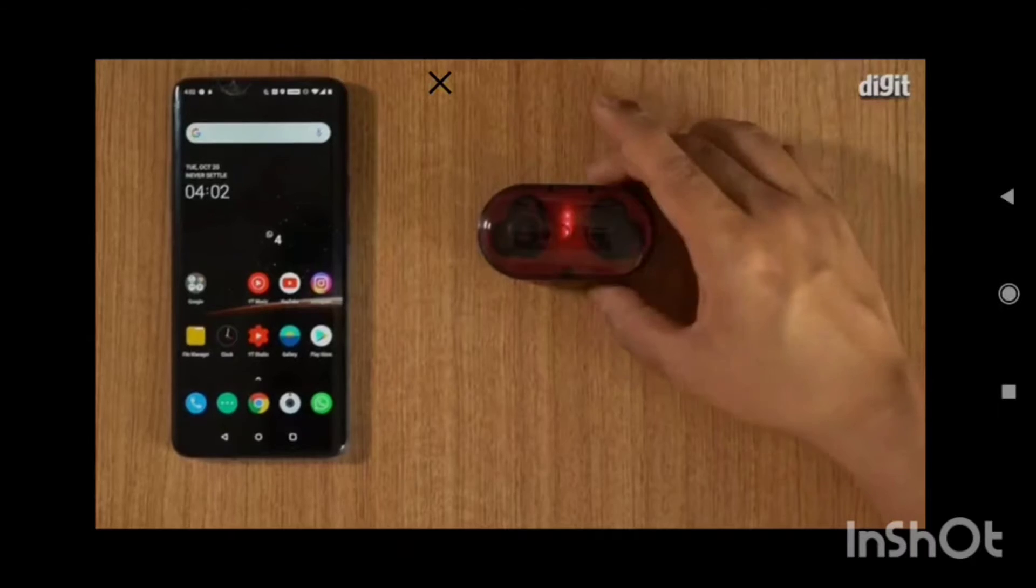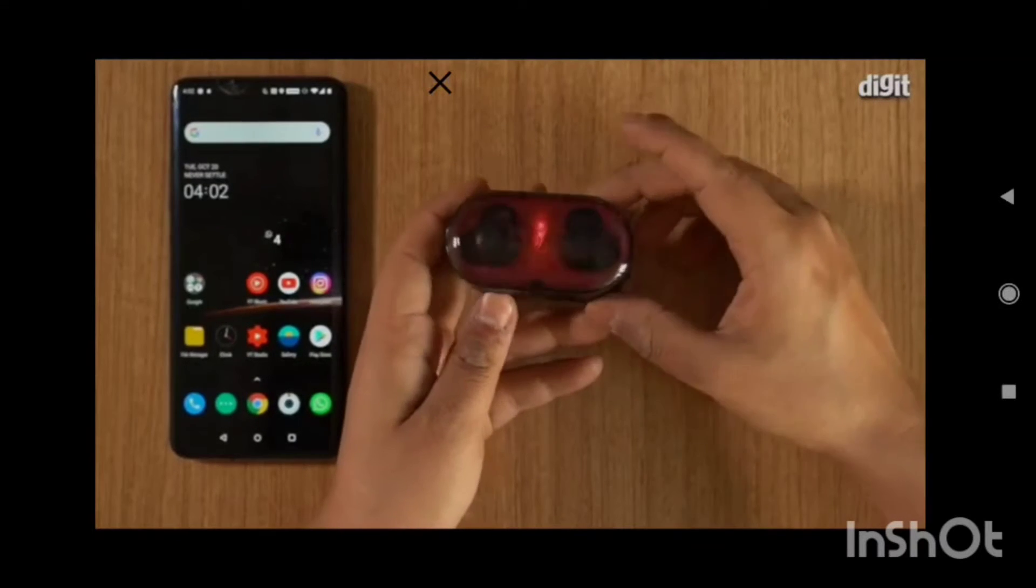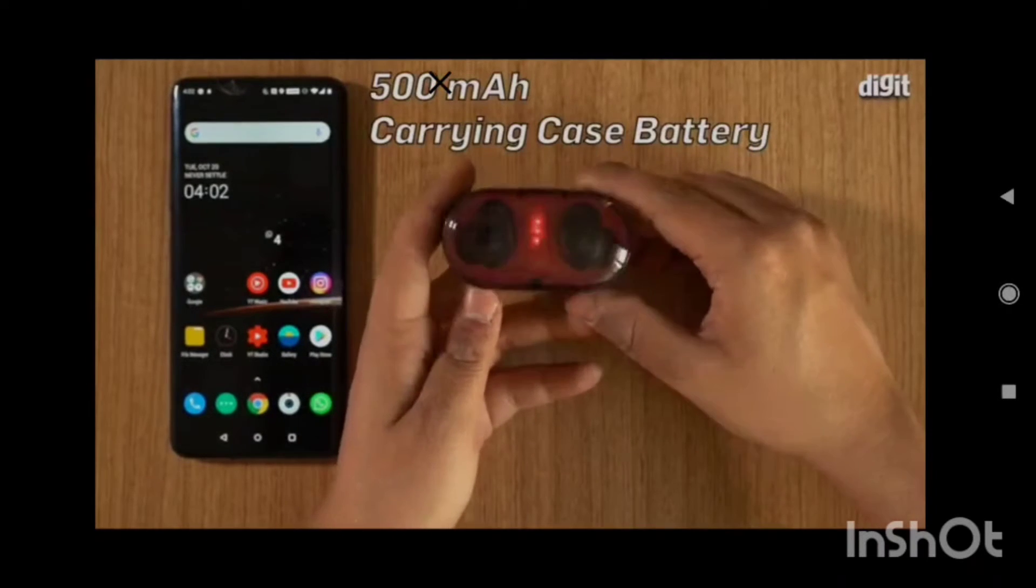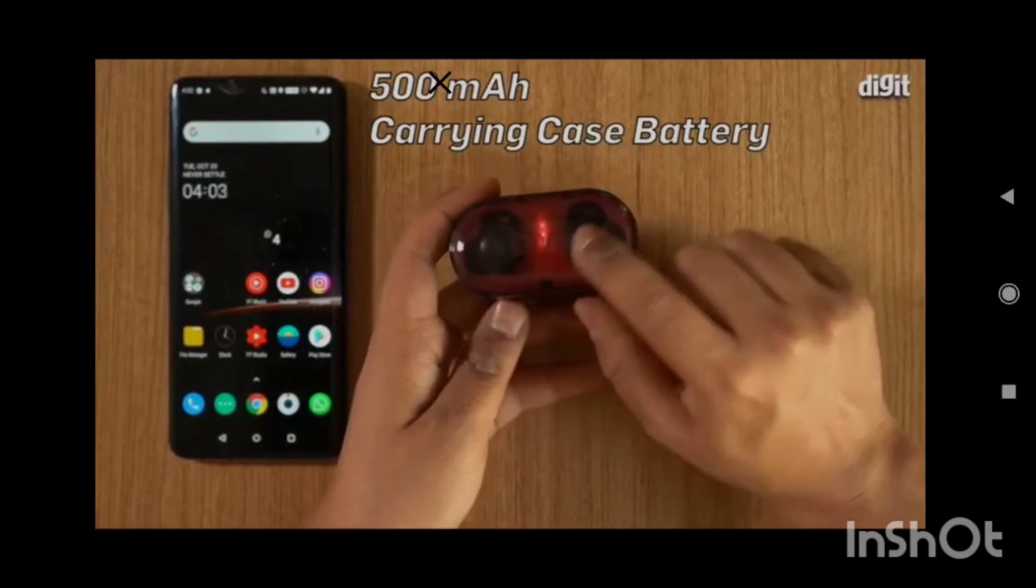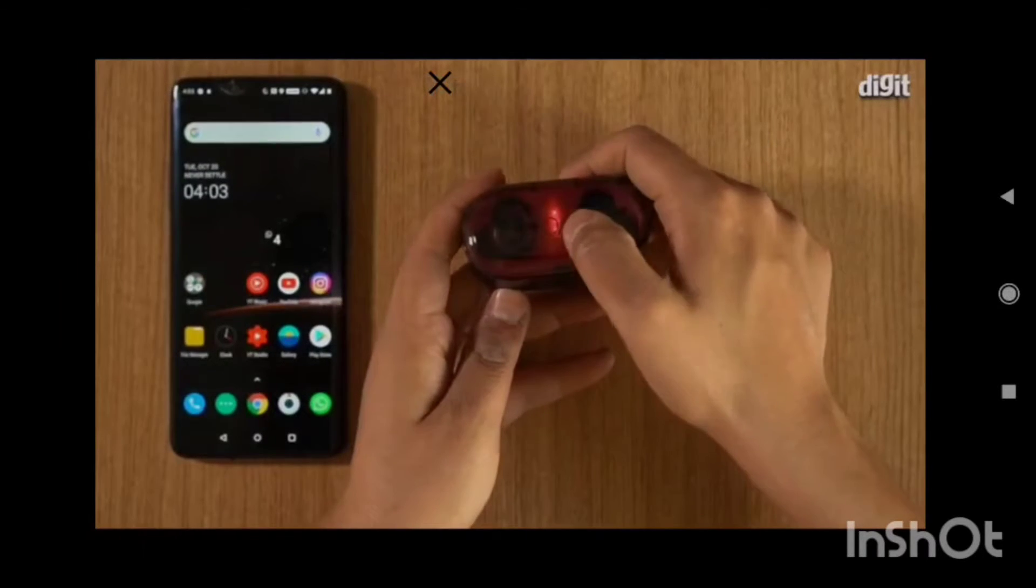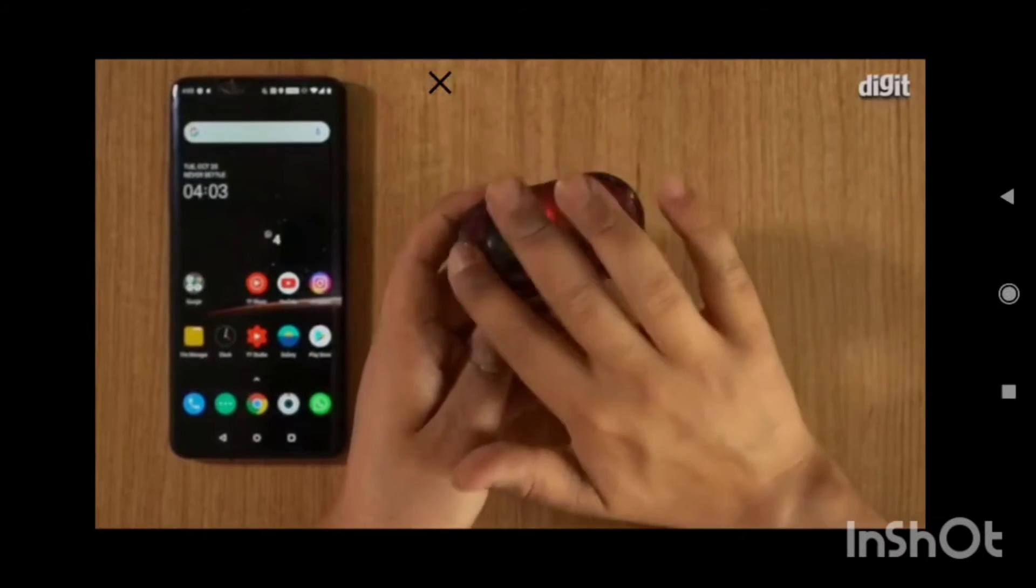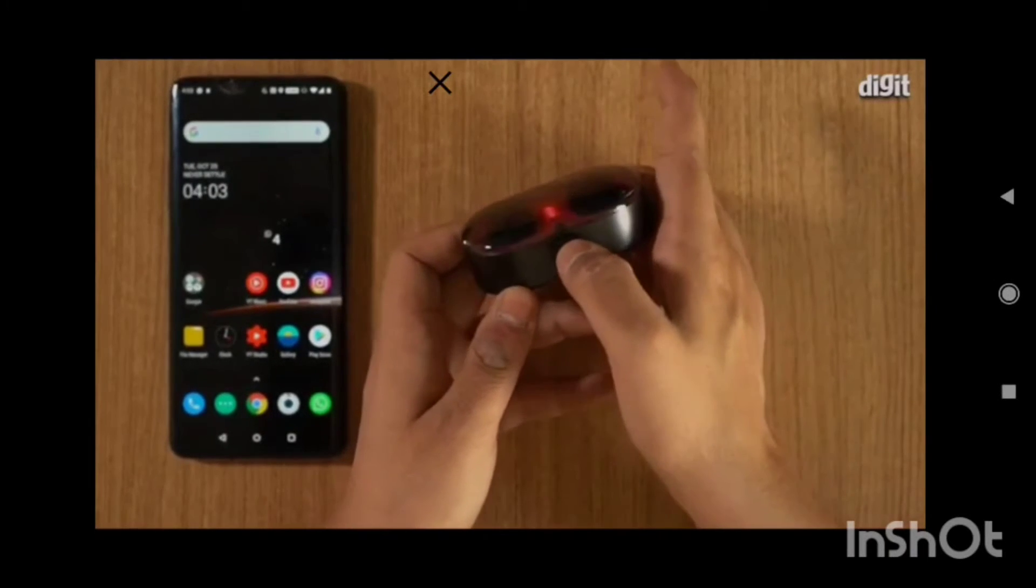The first thing you need to do is when you take them out, you can see this is a charging case, a 500mAh charging case. There's an LED indicator inside with a transparent glass covering and a little button over here which you need to press to release it.